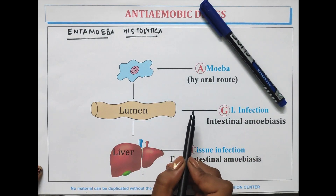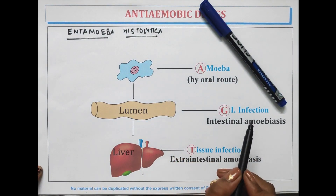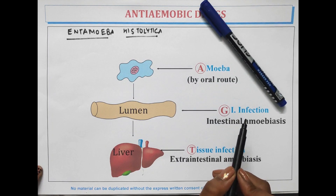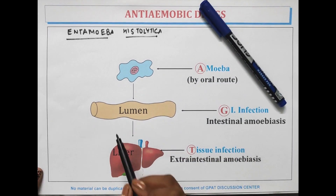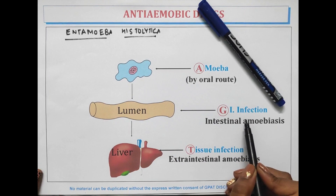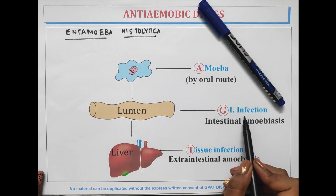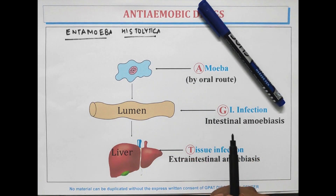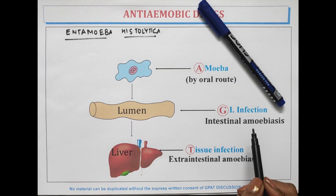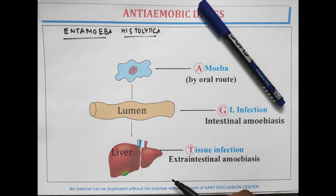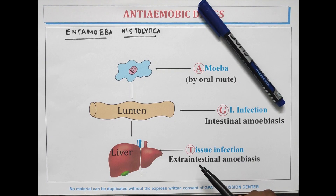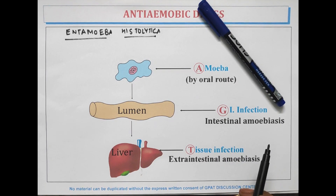Amoebiasis is a protozoal infection caused by the anaerobic protozoa Entamoeba histolytica. When the infection occurs by the oral route, it involves the amoeba. When GIT infection is caused by Entamoeba histolytica it is intestinal amoebiasis. When the disease occurs in the liver or tissue, it is extra-intestinal amoebiasis.